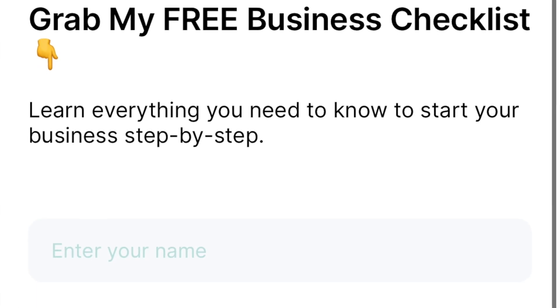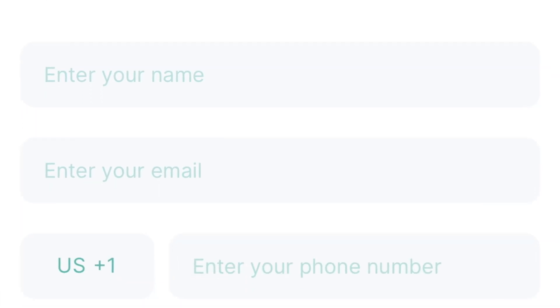In my website, I offer the same opt-in in two different places. The first location is on my Stan Store. You can see that it says 'grab my free business checklist, learn everything you need to know to start your business step-by-step,' and then it has a place for the person to put their name, their email, and their phone number if they choose. I built that through Stan Store — I've done other videos that explain what Stan Store is — but that's just one location where I'm building my email list.